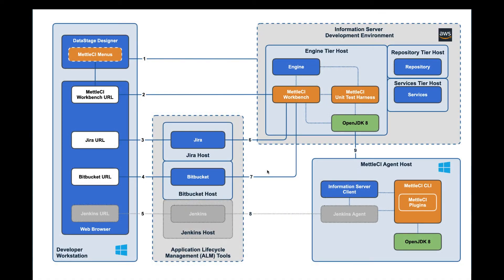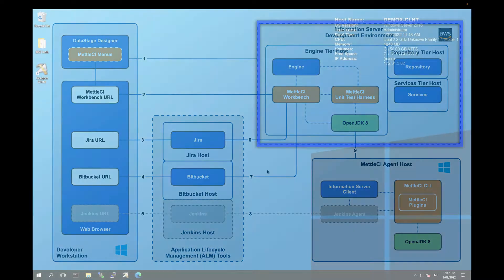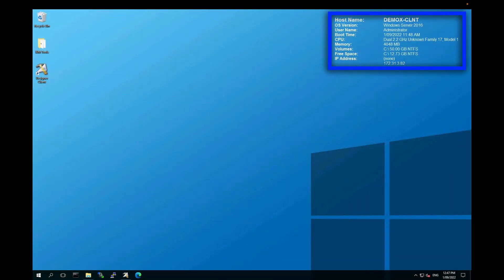This is the topology that we're going to be using today. I'm running a Data Stage 11.7 instance. Everything happens to be running on AWS EC2 instances. I've got a single engine tier host, a repository tier host, and a services tier host. I've got this box here,